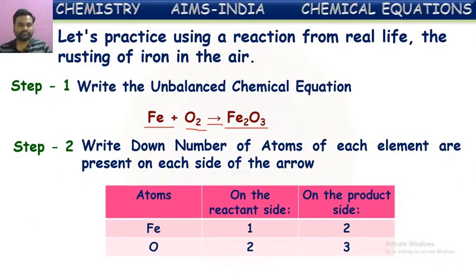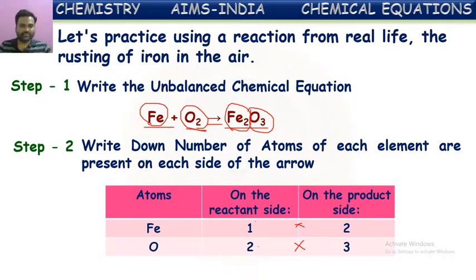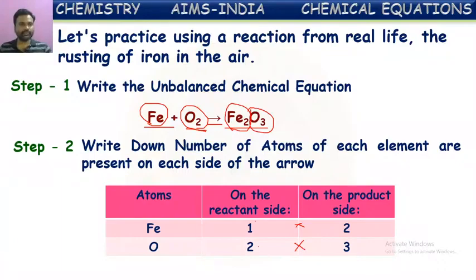Looking at the atom count: number of iron atoms on the left hand side = 1, but in Fe2O3 on the right hand side there are 2 iron atoms — so iron atoms are not the same on both sides. Oxygen atoms on the reactant side = 2, but on the product side there are 3 oxygen atoms. So oxygen atoms are also not the same. Hence it is an unbalanced equation.